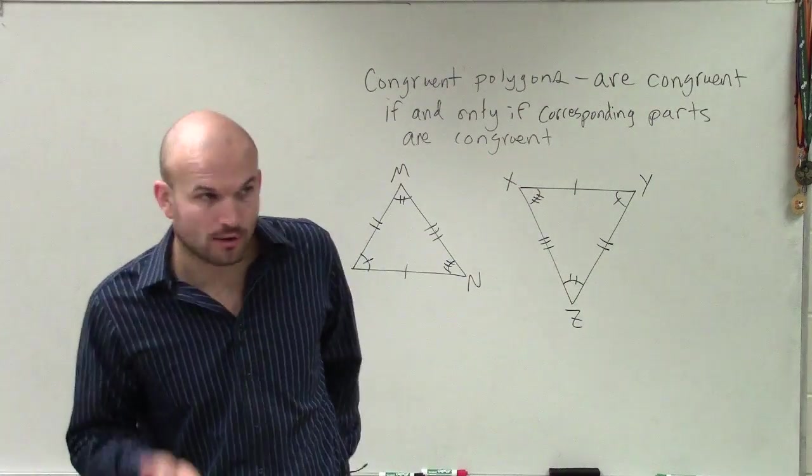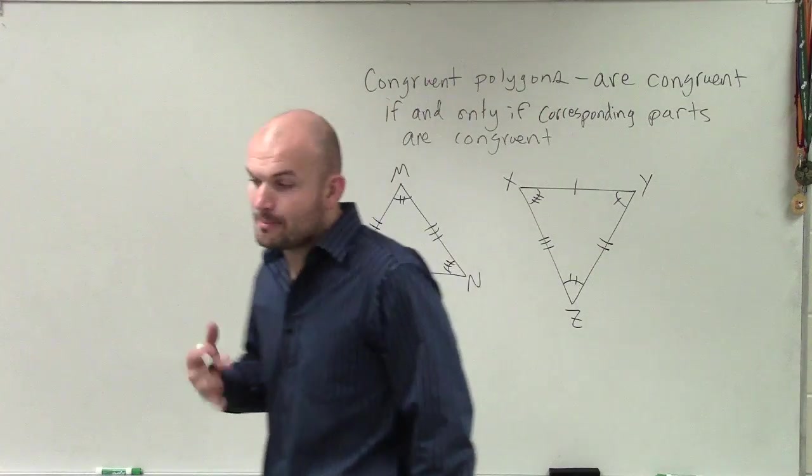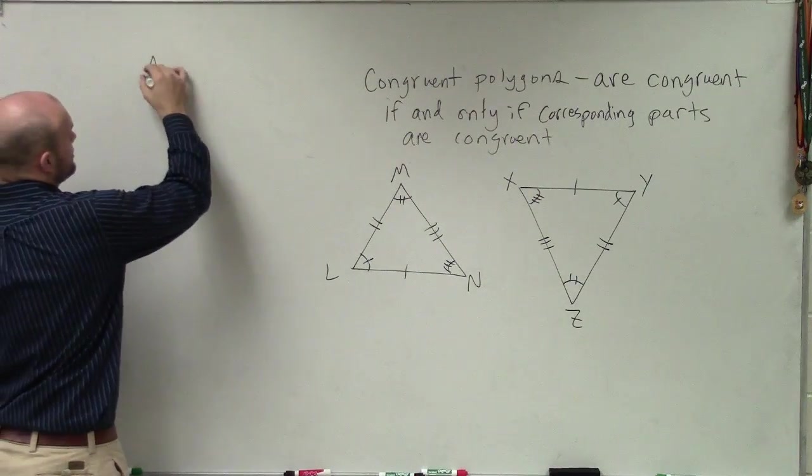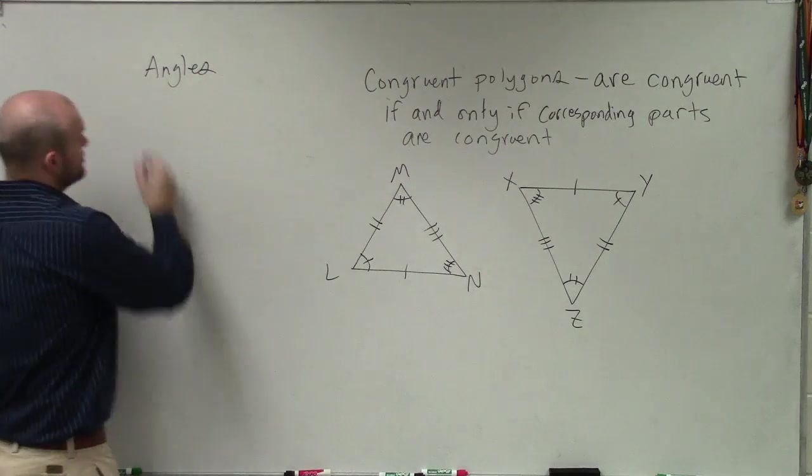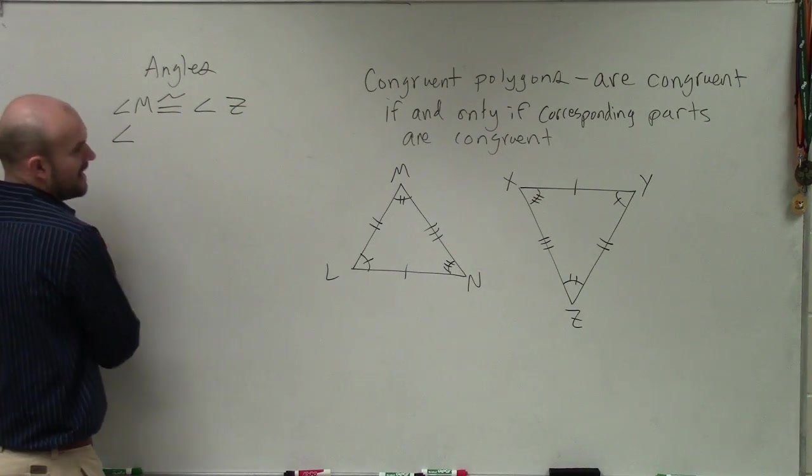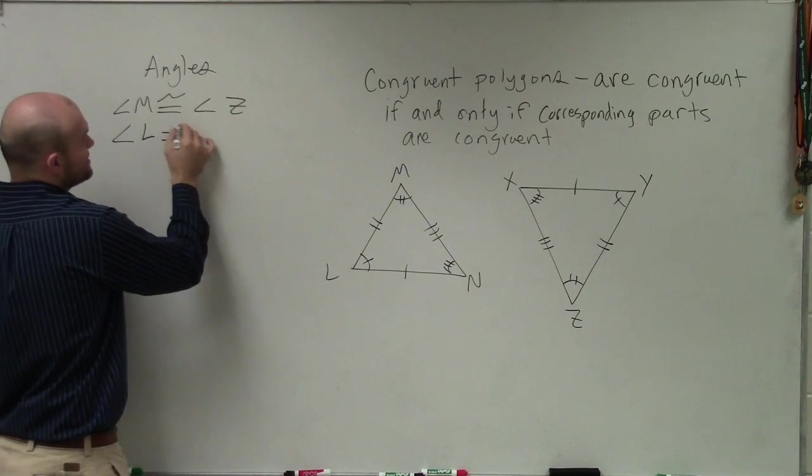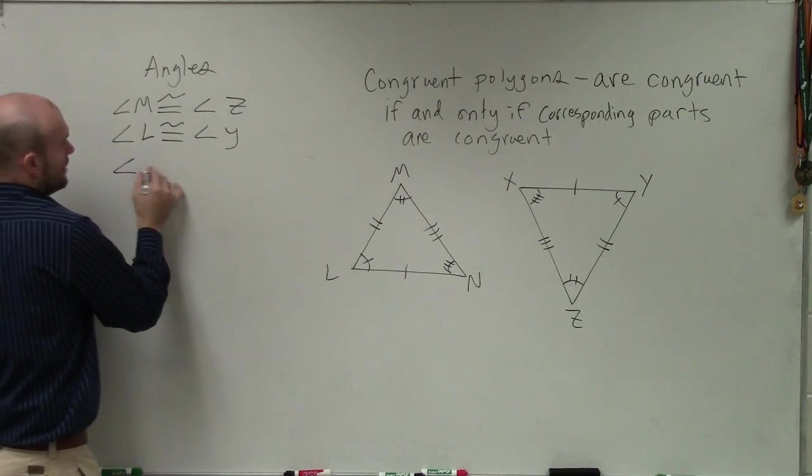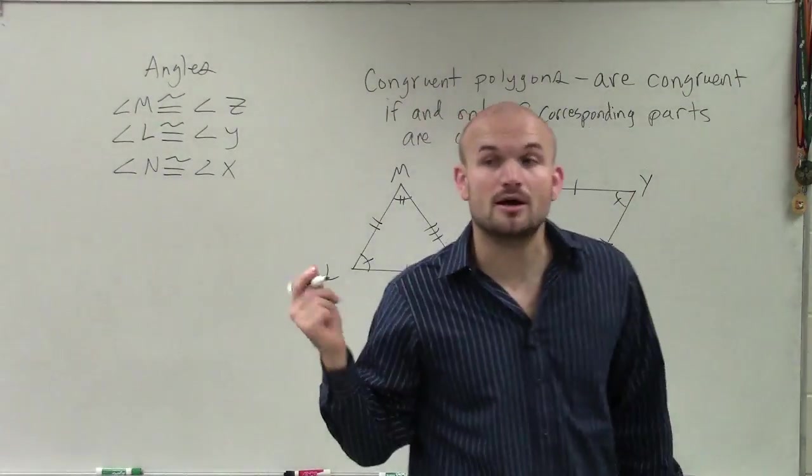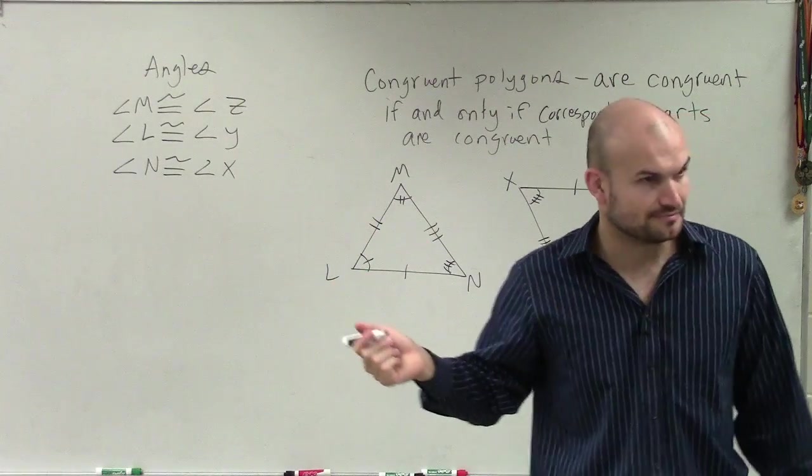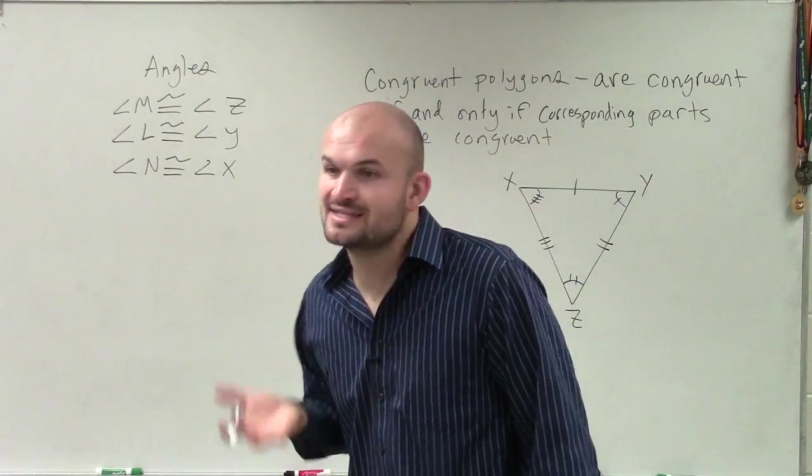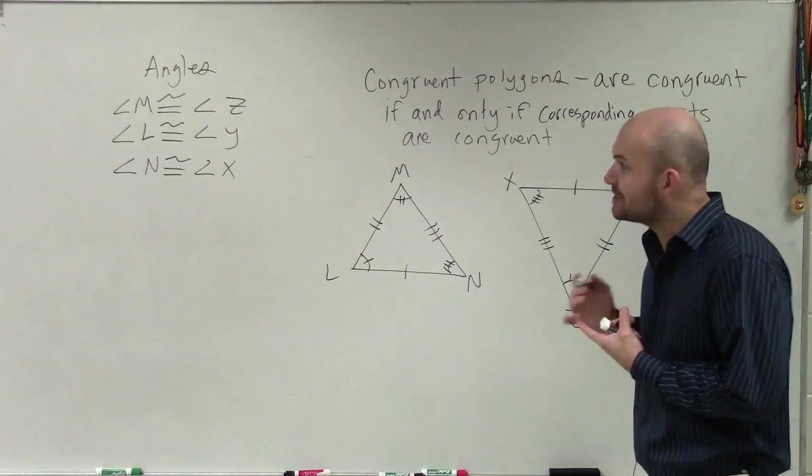For us to know that triangles are congruent, or polygons are congruent, their corresponding parts have to be equal in measure. Therefore all my angles have to be equal in measure, meaning angle M is congruent to angle Z, angle L is congruent to angle Y, and angle N is congruent to angle X. So my corresponding angles are congruent.